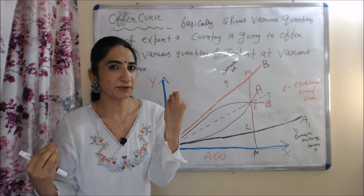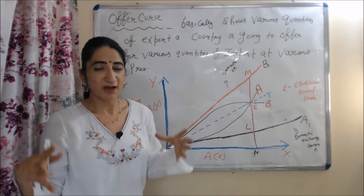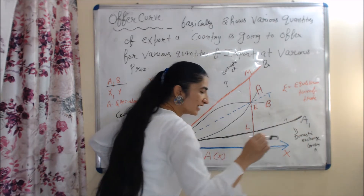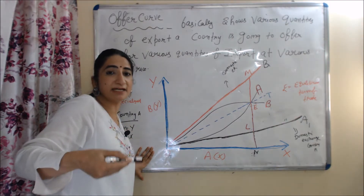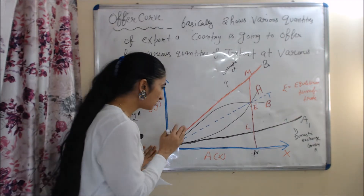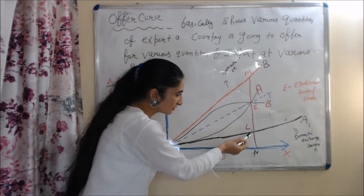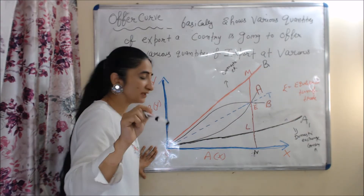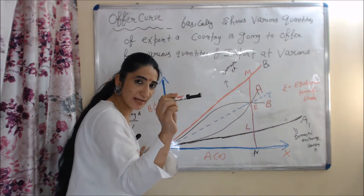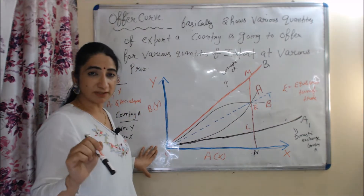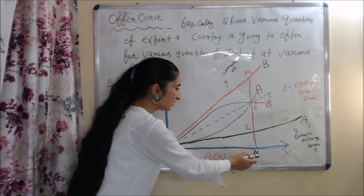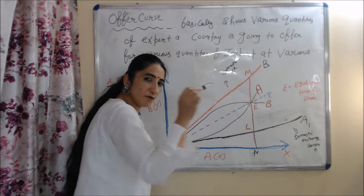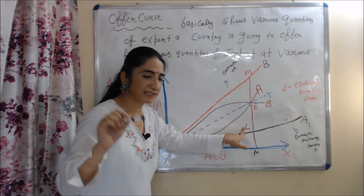To understand gain from trade, we need to know the before-trade conditions of both countries. OA1 is the domestic exchange rate line of country A. Before trade, if country A wants to produce LN amount of Y, it has to give up ON amount of X. But after trade, country A is exporting ON amount of X and in return receiving EN amount of Y. So EL is the gain of country A after trade.